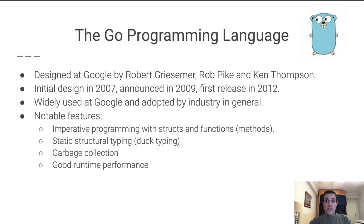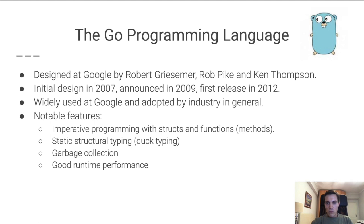Before getting into the specifics of our work, I'm going to tell you a bit about Go and how this work came about. Go was designed at Google by Robert Griezmer, Rob Pike, and Ken Thompson. Go is widely used both at Google and in industry in general. Its notable features are imperative programming with structs and functions or methods, static structural typing or duck typing, garbage collection, and good runtime performance.